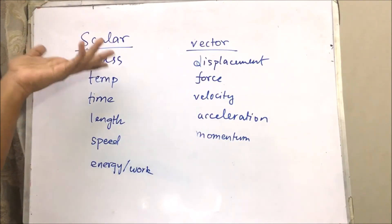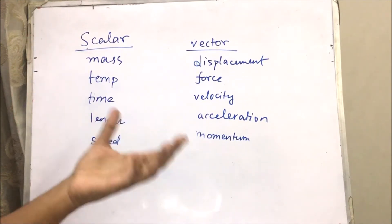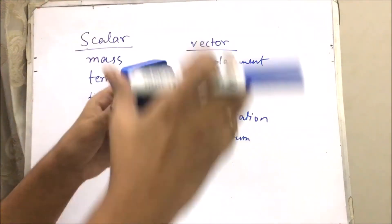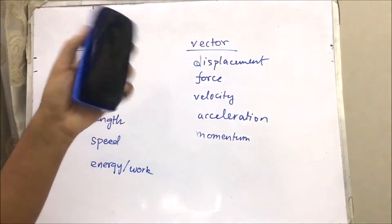For example, mass. Mass is a scalar quantity. You can have a mass. For example, this duster has a mass. How much matter is inside this duster? But it doesn't have a direction.